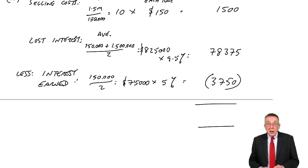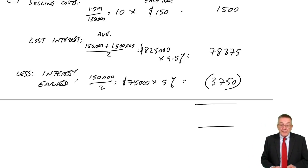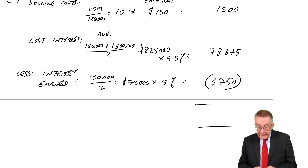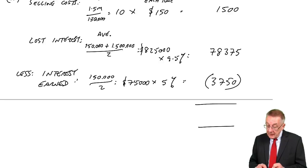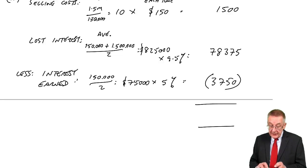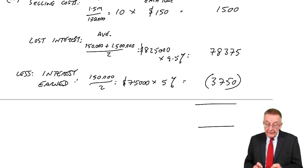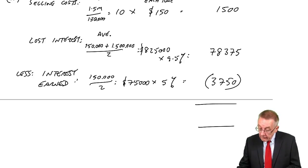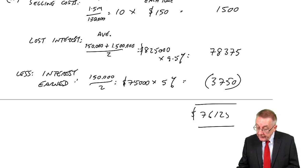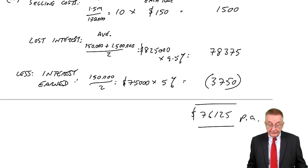So the overall cost of this policy is $1,500 plus $78,375 minus $3,750, which equals $76,125 per year.